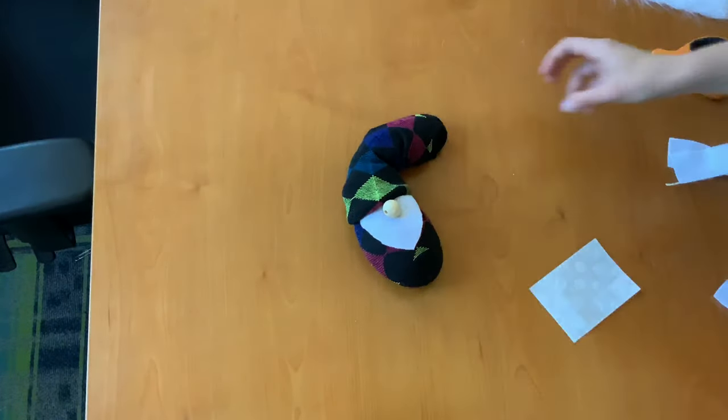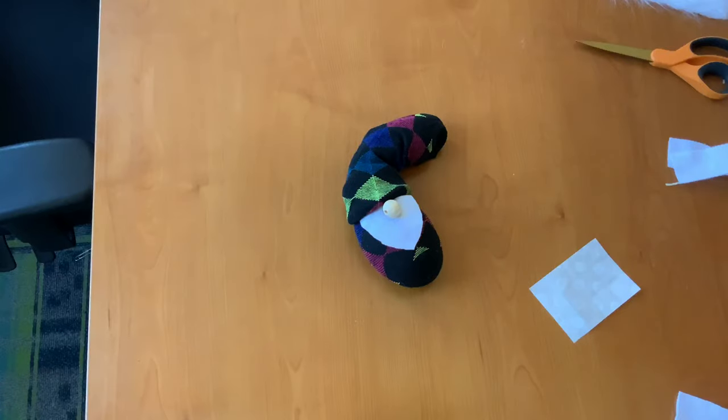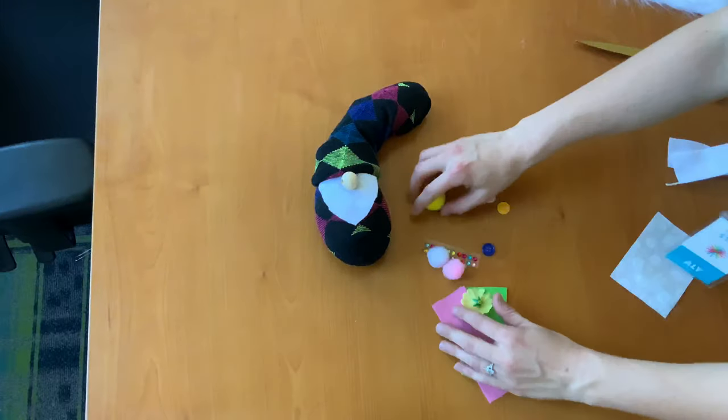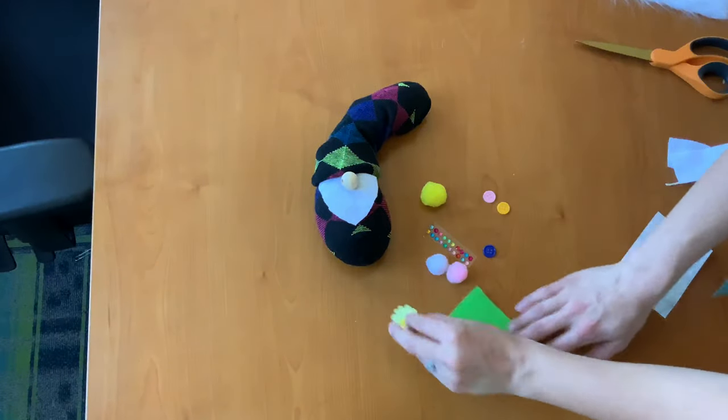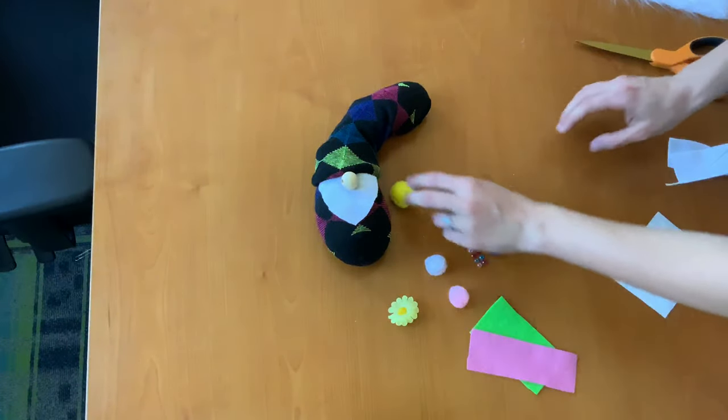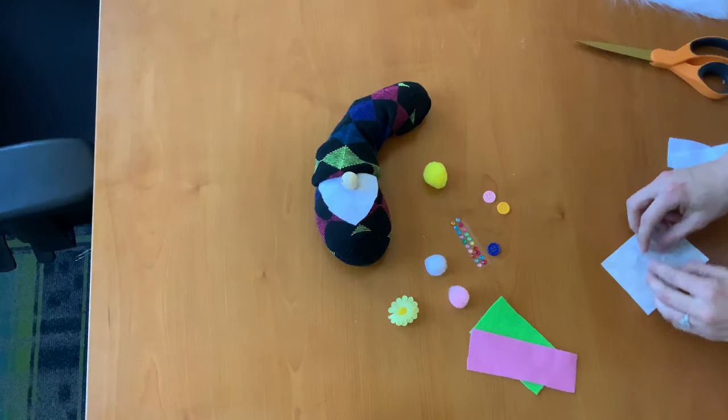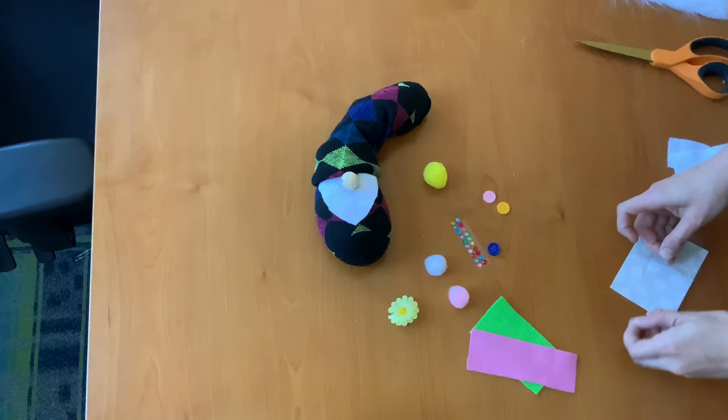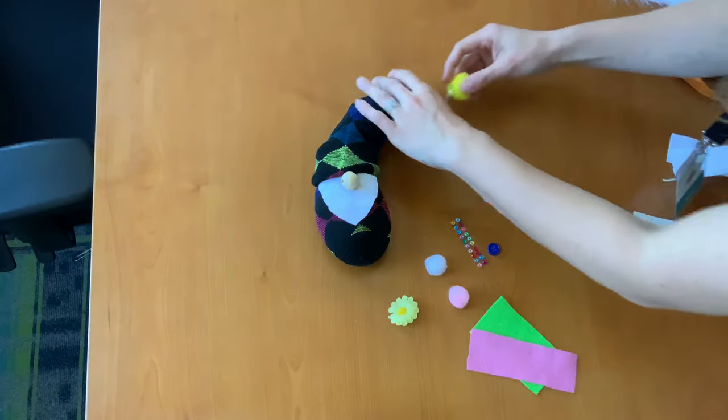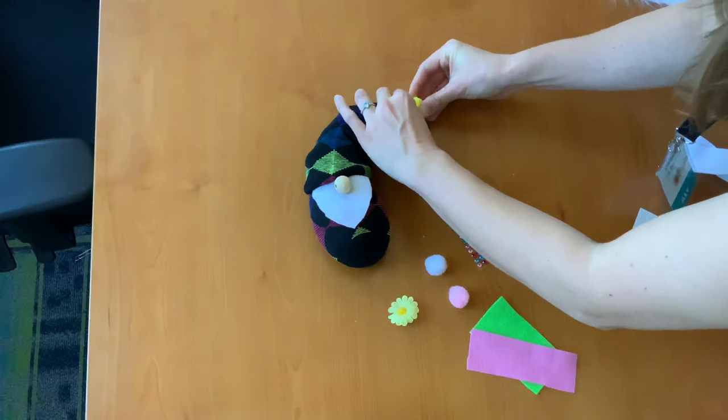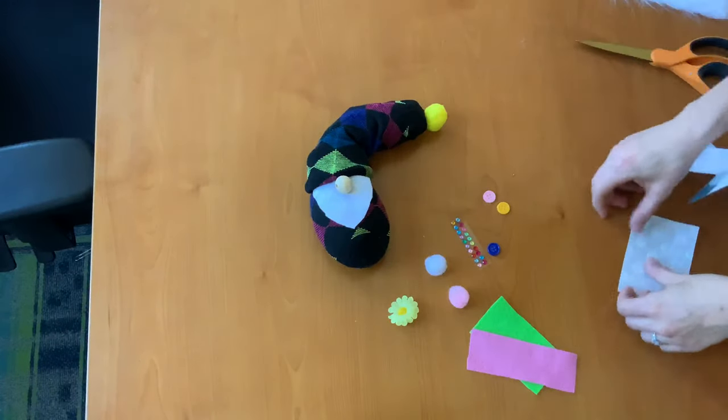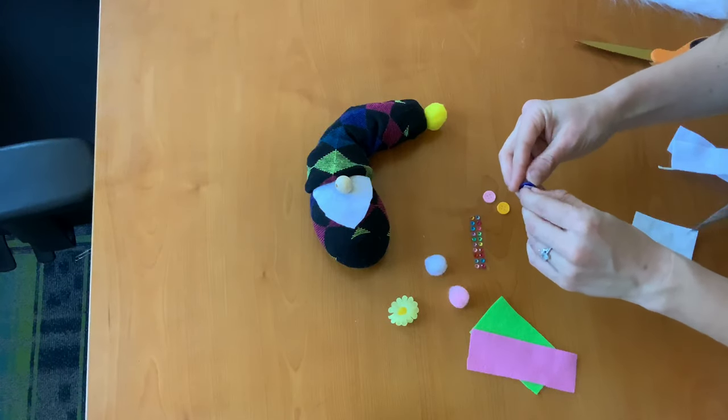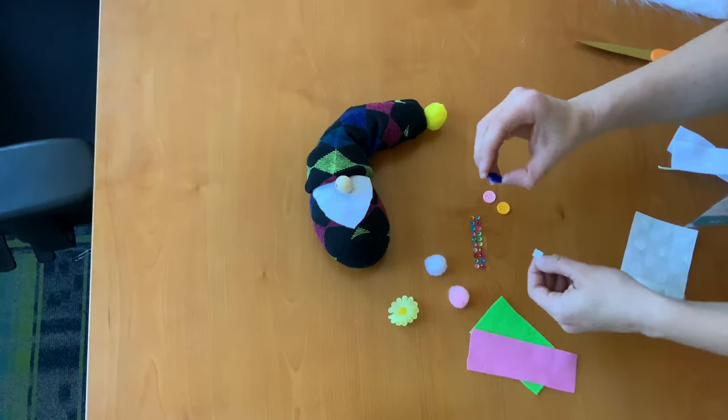So we are almost done with our craft gnomes, with our sock gnomes. Last but not least is to add your decorations. So I've included a few decorations with each kit. I'm going to put a little pom-pom on the tip of my gnomes hat because I think that will be really cute. So there's that guy and I'm going to put some buttons on him. Maybe on his hat. You know, buttons usually don't go on hats but we'll make it cute.